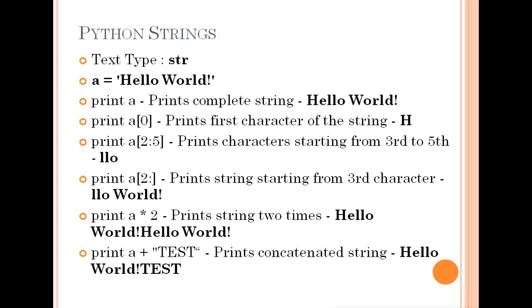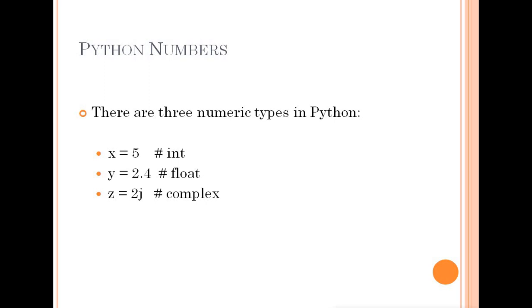Next is Numeric Types. Python has three types of numeric data: Integer, Float, and Complex. Integers are whole numbers, floats are decimal numbers, and complex numbers use j notation. For example, x equals 5, y equals 2.4, z equals 2j. You can also do type conversion — for example, converting a float to an integer.